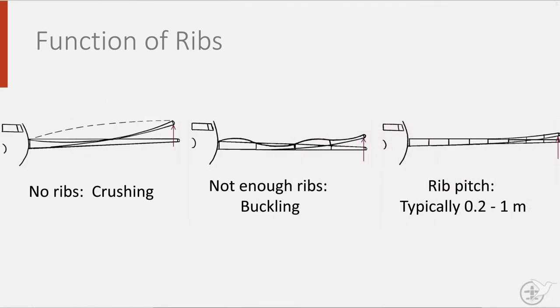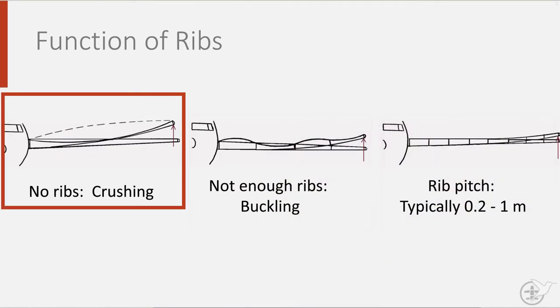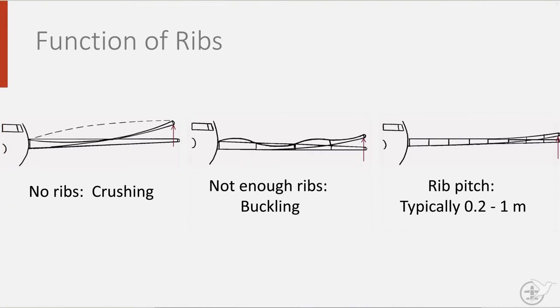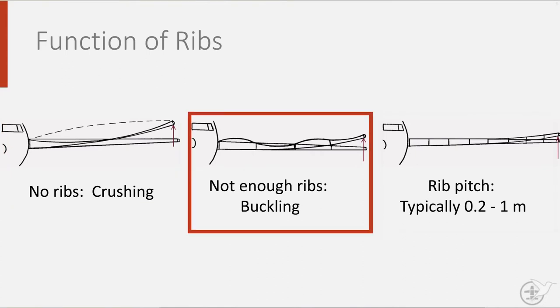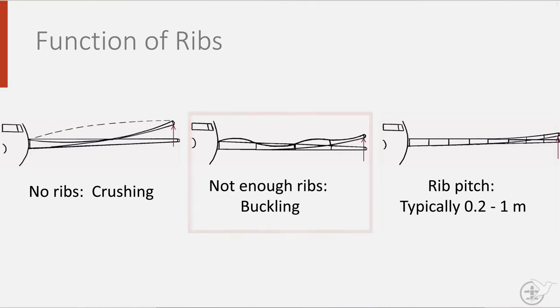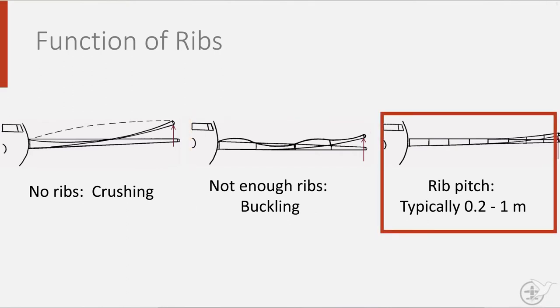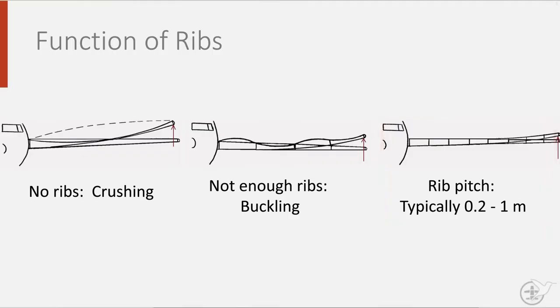Without ribs, the wing would have a much harder time functioning. The wing panels would simply crush, and if you do not put in enough ribs, the wing skin panels will buckle. That's why ribs are typically spaced 0.2 to 1 meter apart, ensuring sufficient distance.